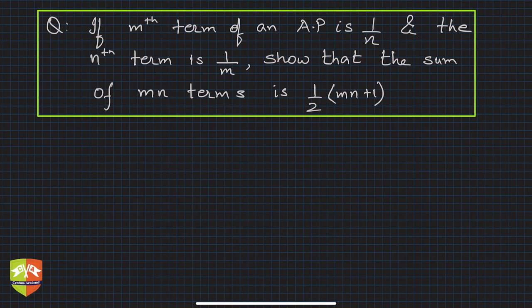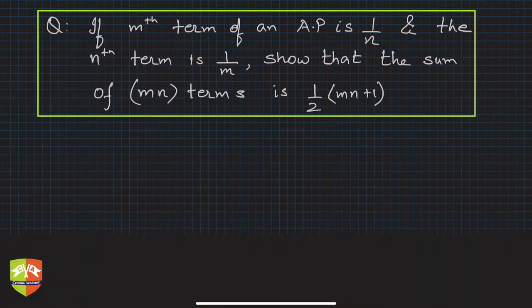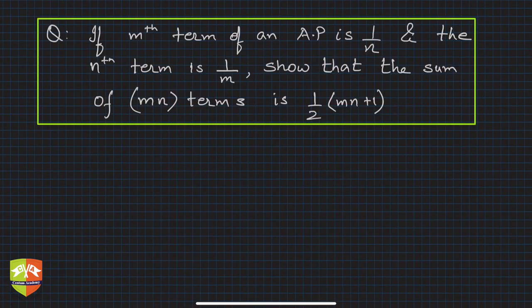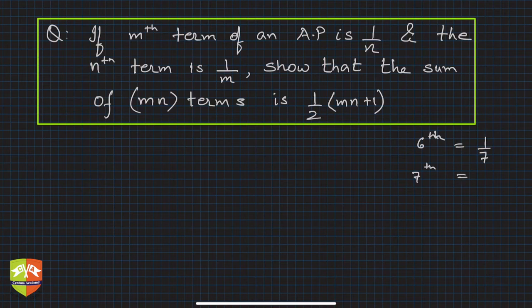In this question, it's given that if the mth term of an AP is 1/n and the nth term is 1/m, show that the sum of mn terms is ½(mn + 1). To make it clear, let's take m = 6, so the sixth term is 1/7, and the seventh term is 1/6.